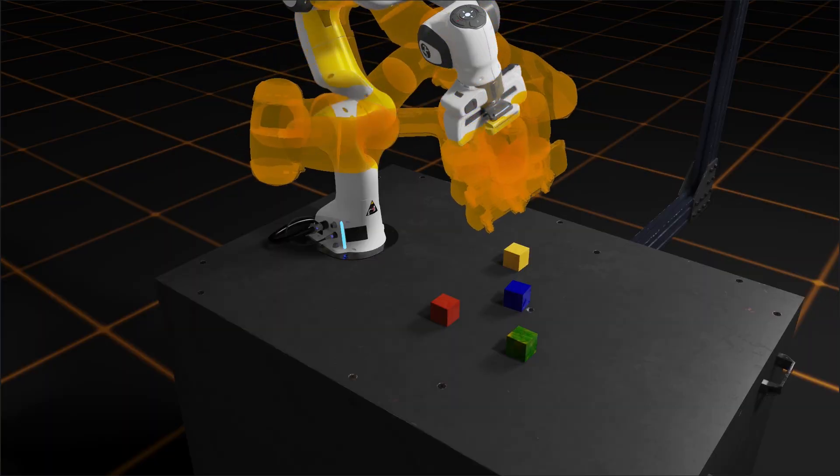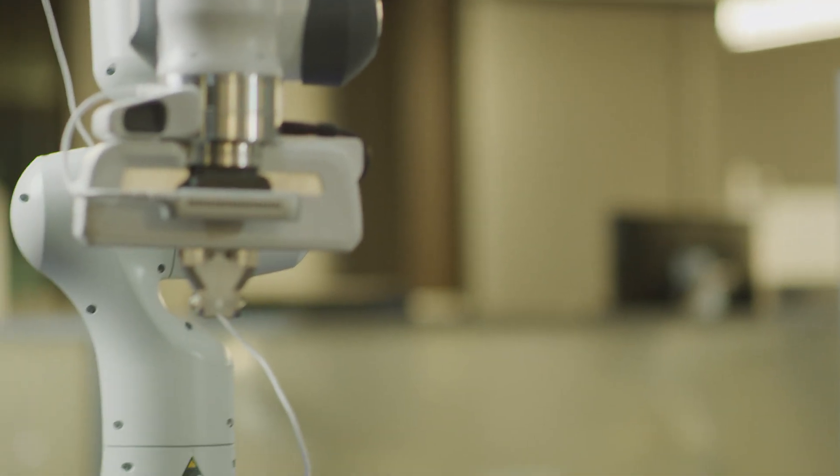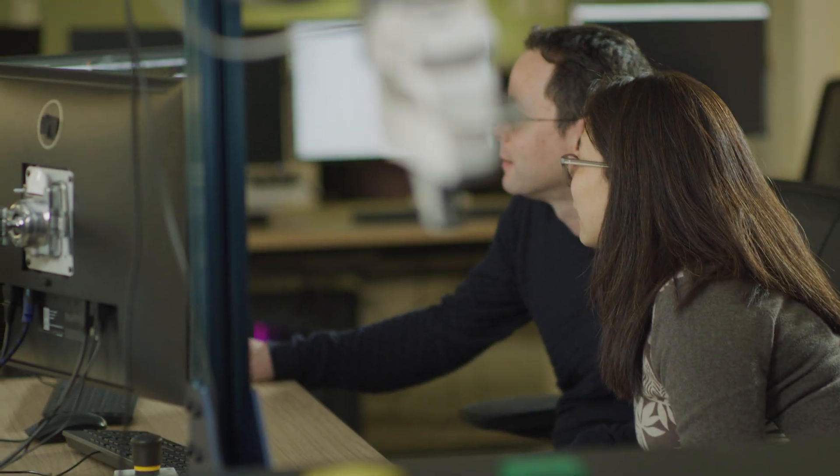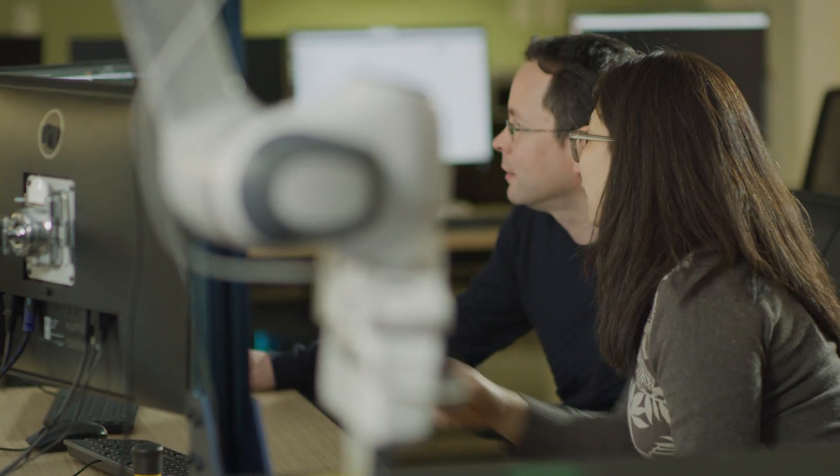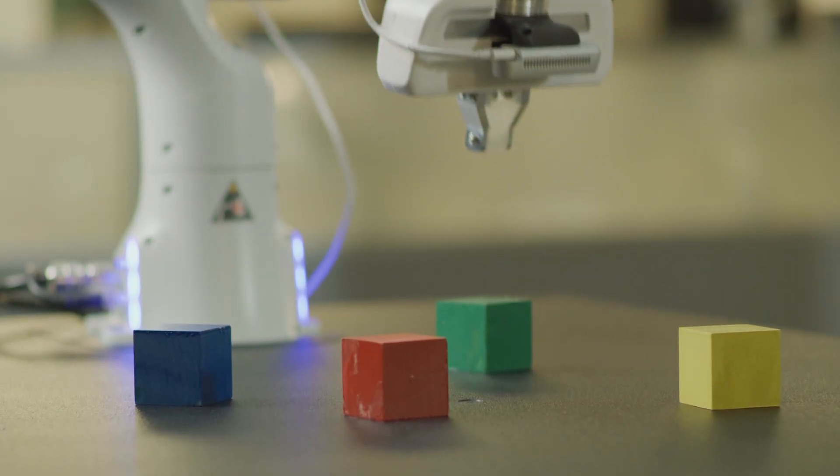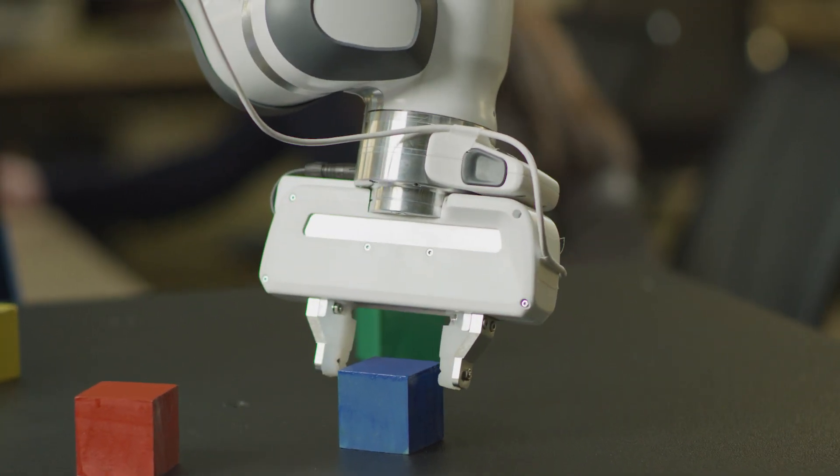The whole idea of using simulation environments only works if the simulation is accurate enough to really reflect what's going on in the real physical world. You need to have the simulation such that it can simulate how the robot manipulator moves if you send certain control commands to it. It needs to also simulate how objects move when the robot touches them. So the physics have to be right.